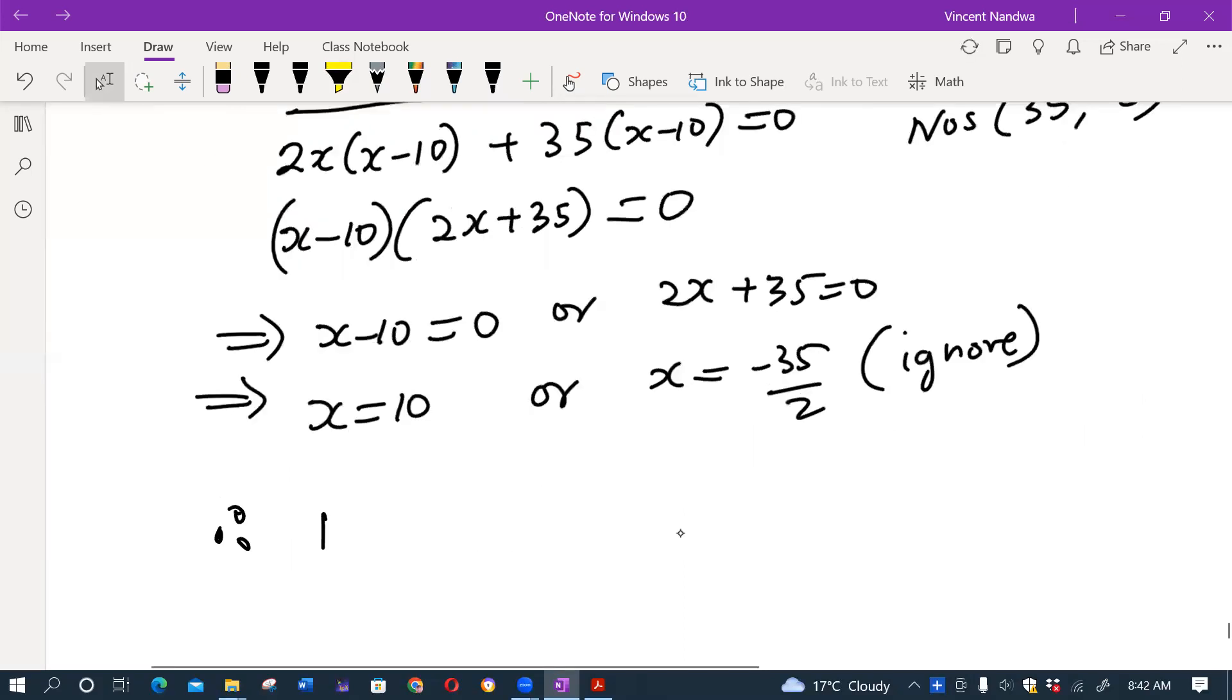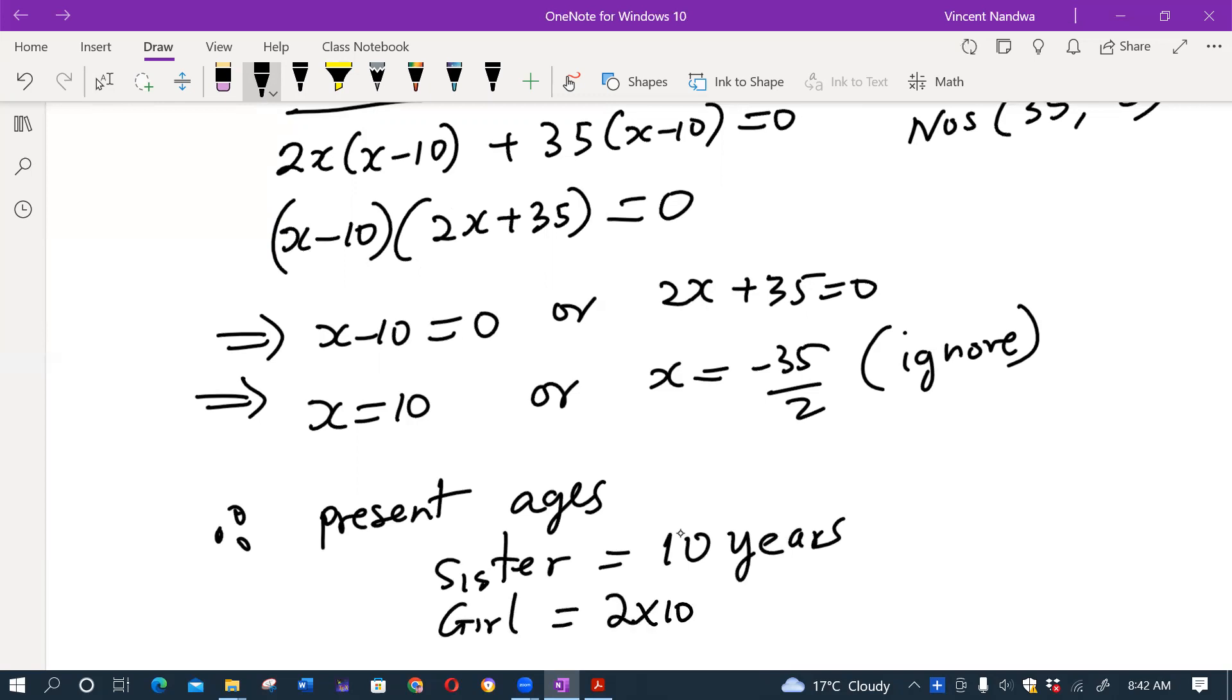Therefore, the present ages will be: the sister will be 10 years, while the girl will be 10 times 2, which is 20 years.